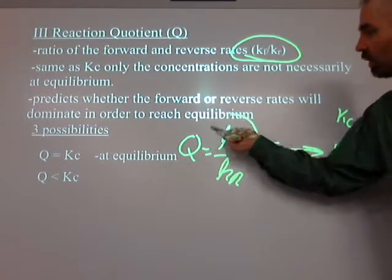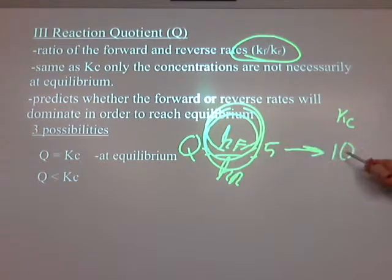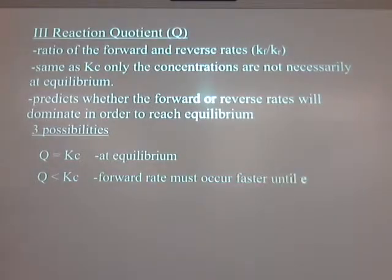How can you get bigger with the denominator? The numerator has to get bigger or the denominator has to get smaller or both. Right? So that tells me which guy is favored. If Q is less than KC, like 5 is less than 10 and I want it to become 10, what's going to happen? I'm going to favor the forward in order for that to happen. So I'm using common sense to figure this out rather than just memorizing, whenever Q is less than KC, it favors the forward.